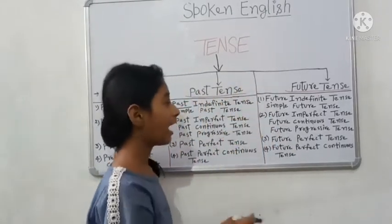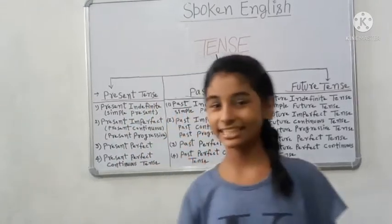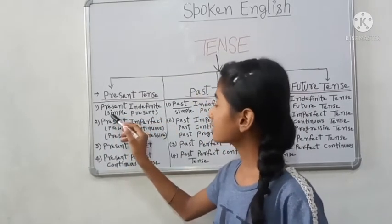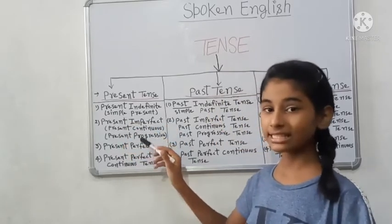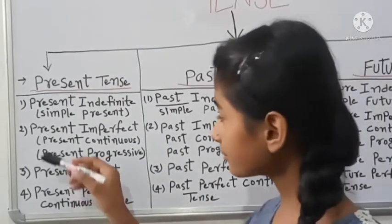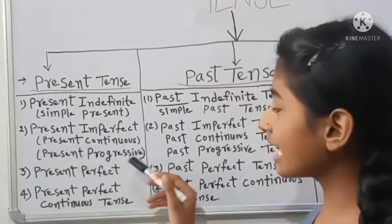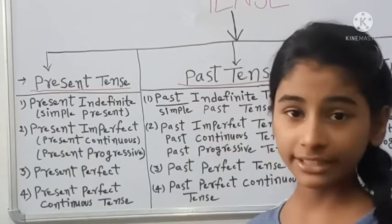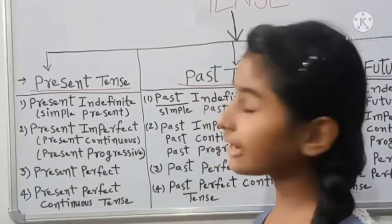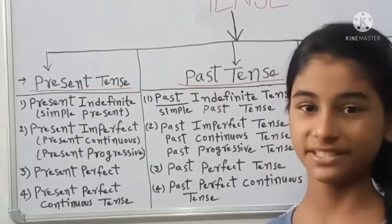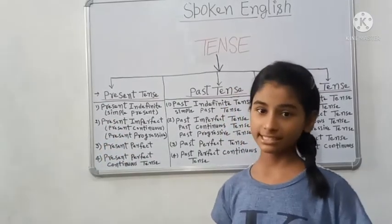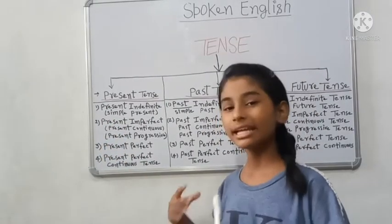Now, present tense, past tense, and future tense each have parts. Let's see how. Present tense: the first part is Present Indefinite Tense, also called Simple Present Tense. It is also known as Present Imperfect Tense — though that name may not be written everywhere. The main name is Indefinite, but if someone says Simple Present Tense, don't be confused — it means the same as Indefinite Tense.